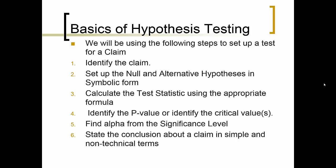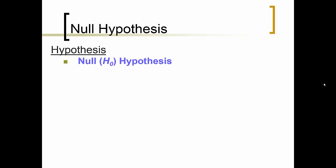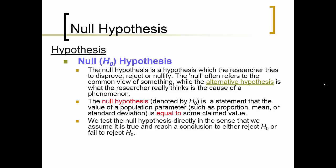The null hypothesis, denoted by H sub zero, is a hypothesis which the researcher tries to disprove, reject, or nullify. The null often refers to the common view of something, while the alternative hypothesis is what the researcher really thinks is the cause of a phenomenon. The null hypothesis is a statement that the value of a population parameter, such as a proportion, mean, or standard deviation, is equal to some claimed value. We test the null hypothesis directly in the sense that we assume it is true, and reach a conclusion to either reject it or fail to reject it.